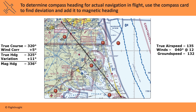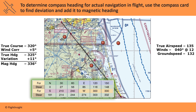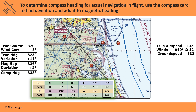Because the compass has errors due to fields in the aircraft, it has a card which indicates how much to adjust it for certain headings. Since we want a 336 heading, we'll notice on the card that a northwesterly heading requires a 2 degree correction. So we'll add that to the magnetic heading to get our compass heading of 338 degrees. This is what we'll actually want to fly in the cockpit.